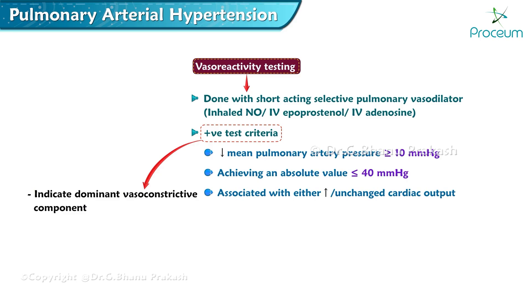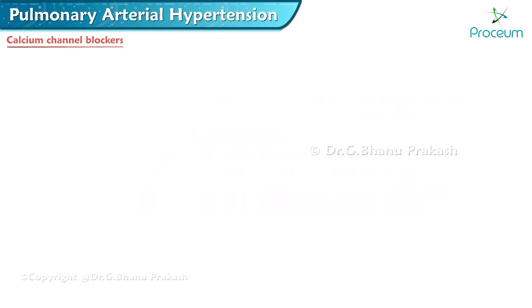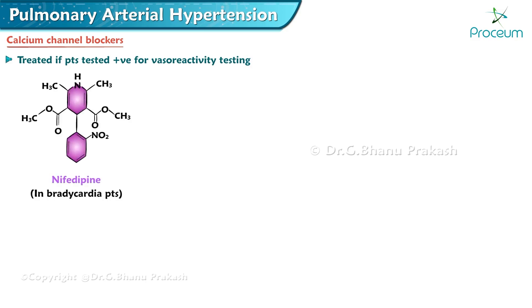The reduction must be associated with either an increased or unchanged cardiac output. A positive test result indicates a dominant vasoconstrictive component in the pathophysiology of the disease and is associated with a good prognosis. Patients who test positive for vasoreactivity testing can be treated with calcium channel blockers.